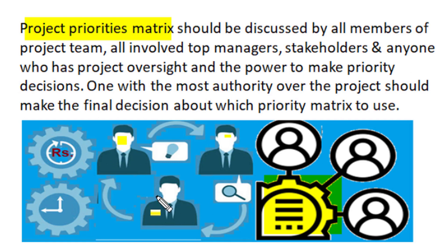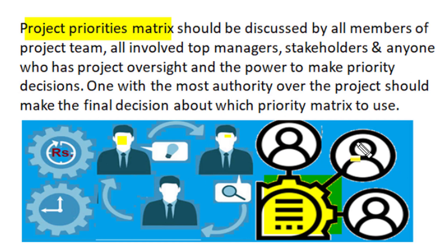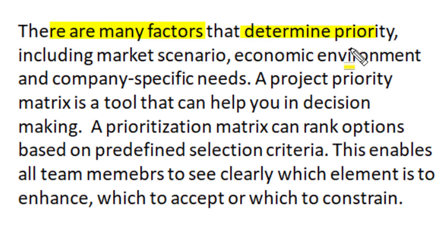Project priority metrics on budget cost, time schedule and performance scope should be discussed by all members of the project team. It must involve all top managers, other stakeholders and anyone with project oversight and power to make priority decisions. The person with the most authority over the project should make the final decision about which priority metrics to use — whether to enhance, accept or constrain the three project criteria.